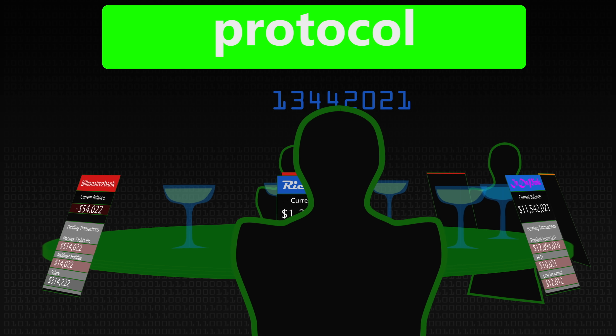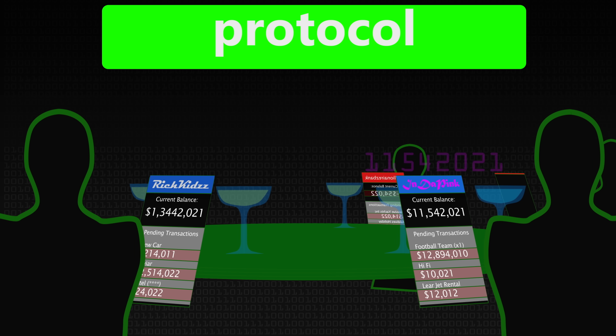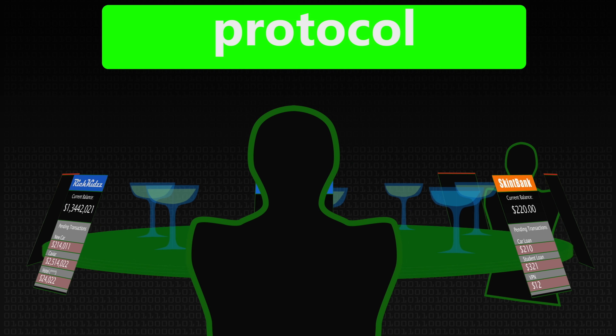It turns out that oblivious transfer and garbled circuits go hand in hand. So everyone enters their net worth into the protocol and then the protocol will simply say person X is the richest. Garbled circuits are a way to solve this problem, but not just this problem — you can solve any problem that can be logically specified using Boolean circuits, which is pretty much how computers work. And compute the answer, just give you the answer, and not leak any other information.